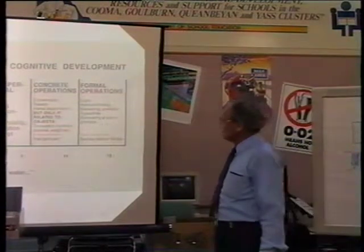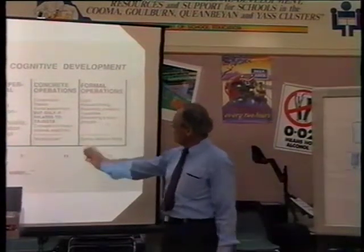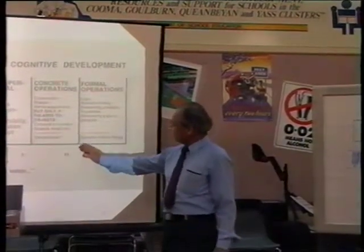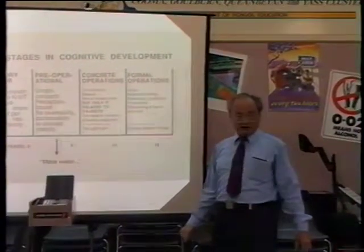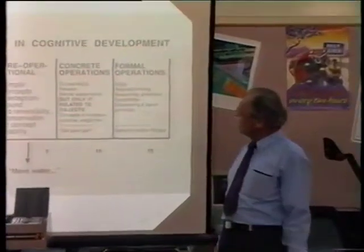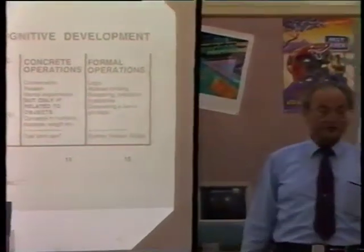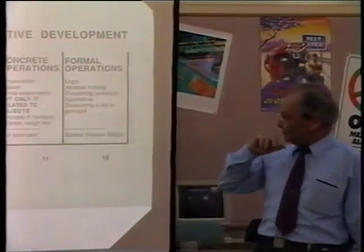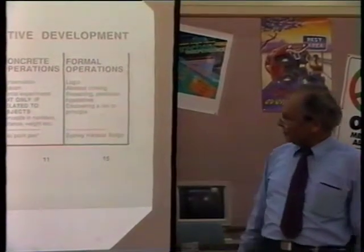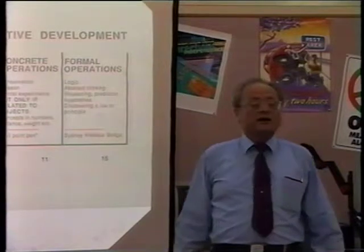Concept and number, et cetera. Then from there on, we go into the final stage — the inner thinking stage, which Piaget called formal operations. Here we have logic, abstract thinking, et cetera.